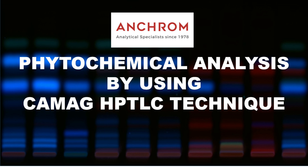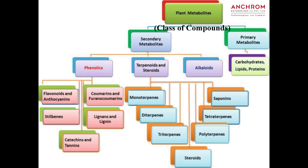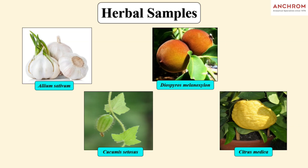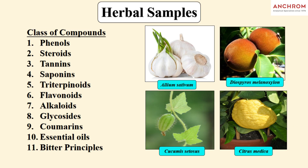Greetings from Ancrum. Welcome to our tutorial video on phytochemical screening of herbal extract using Camag HPTLC technique. Phytochemicals or secondary metabolites, also known as class of compounds, are naturally occurring bioactive compounds found in various parts of plants, which are responsible for the medicinal properties of plants and contribute to their therapeutic values. In this video, we aim to identify 11 classes of compounds from four herbal extracts using our Camag HPTLC system.